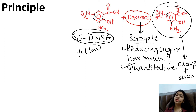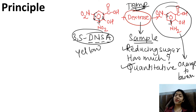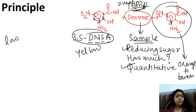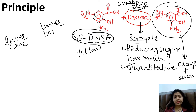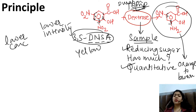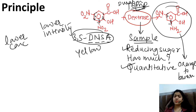The color intensity depends on the concentration of dextrose, as well as the temperature at which we heat it and the duration for which we heat the compound. Lower the concentration of dextrose, lower will be the color intensity; higher the concentration, higher the color intensity. So, whatever sample and standard solutions we have, we must treat them equally in the same manner — equal treatment must be given to all test tubes so that there is no variation in duration of heating or temperature.